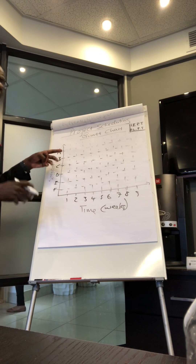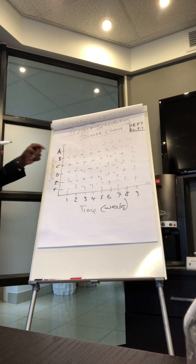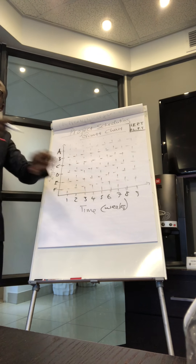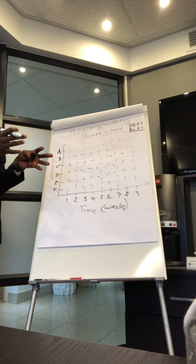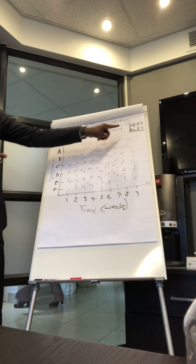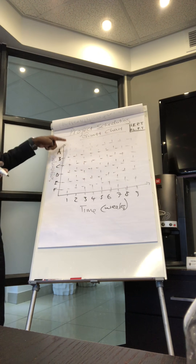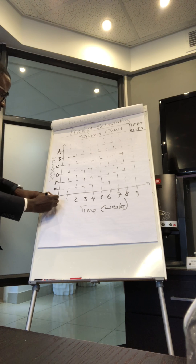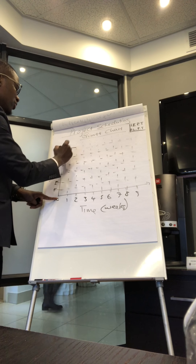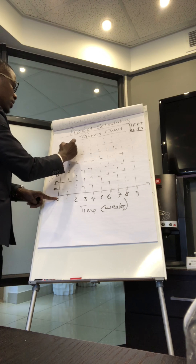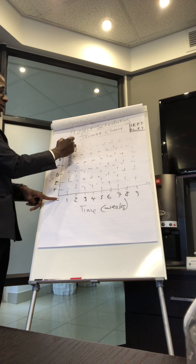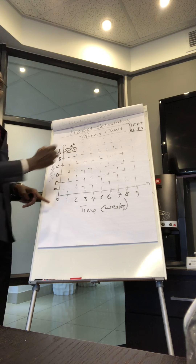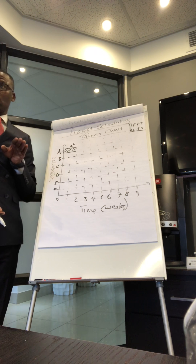Let's assume there is Activity A, or deliverable A, which has no dependence — it doesn't depend on anything for it to start — and it's going to take two weeks. We should start it at the earliest possible time, which is zero. So we draw a bar that is two weeks, and we label this Activity A taking two weeks.